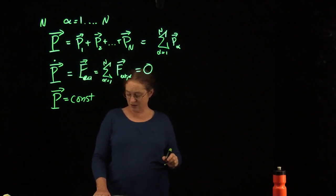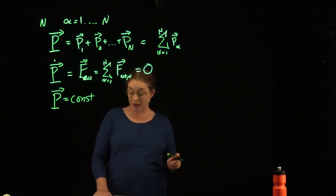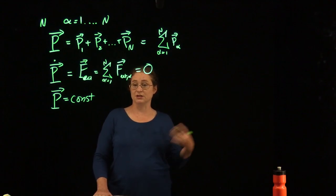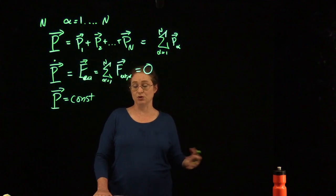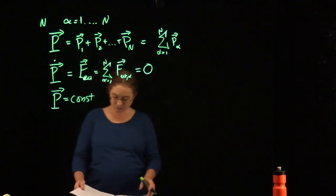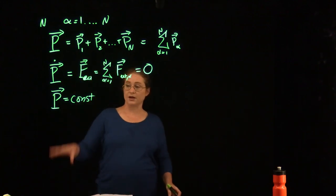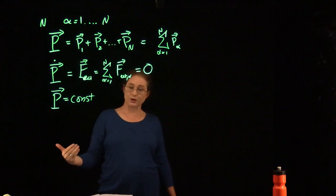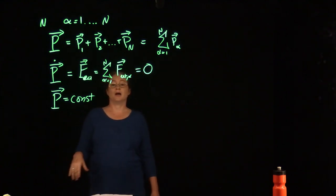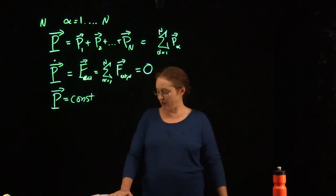If we have n equals 1, we get back to Newton's first law: an object in motion tends to remain in motion, an object at rest tends to remain at rest. There's a whole class of examples where you look at collisions between isolated or approximately isolated objects.